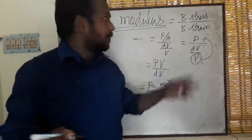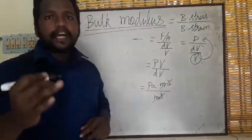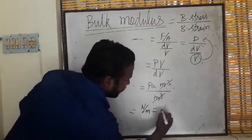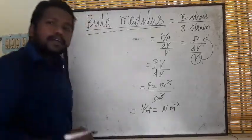That means bulk modulus is equal to force per unit area, that is called pressure. So pressure is force per unit area, Newton per meter square, so Newton meter to the minus two.